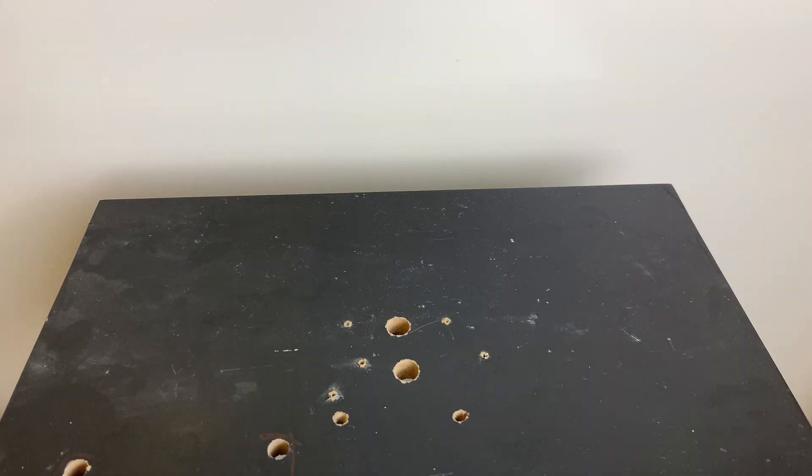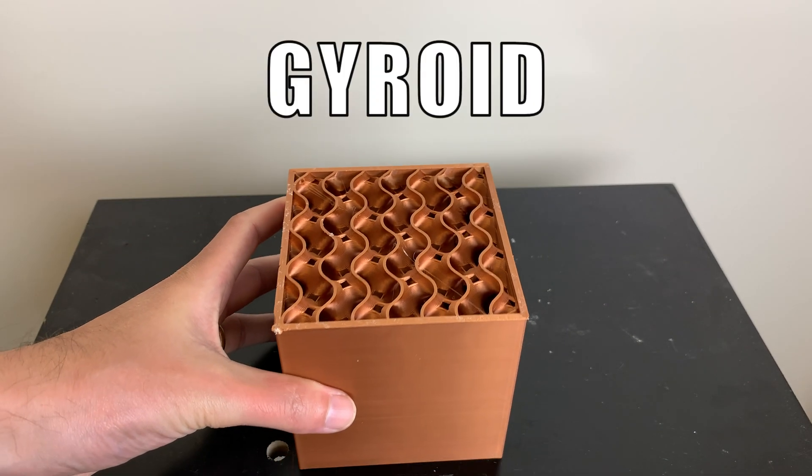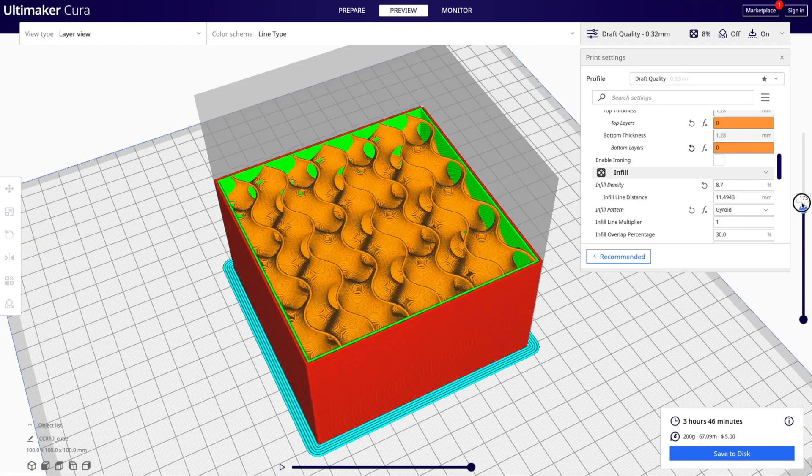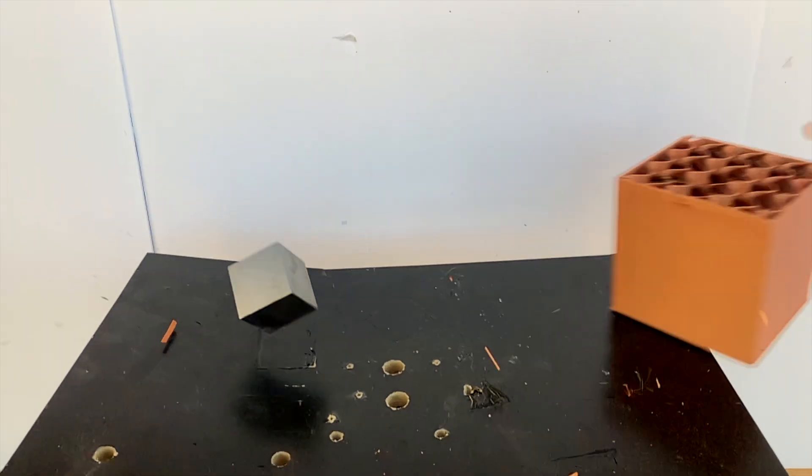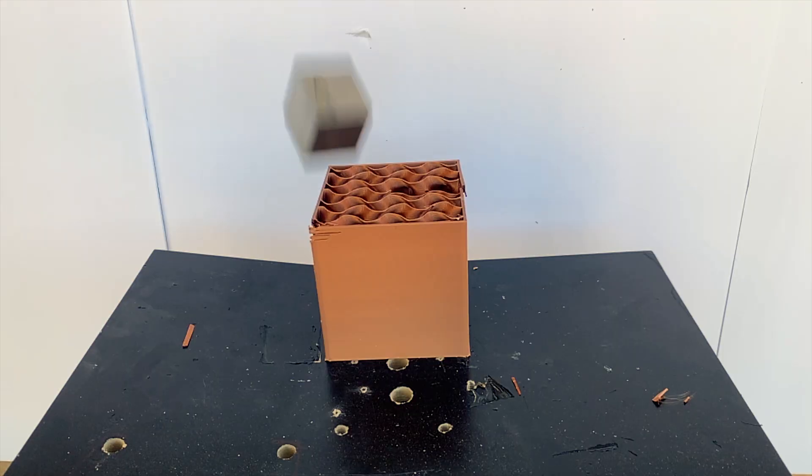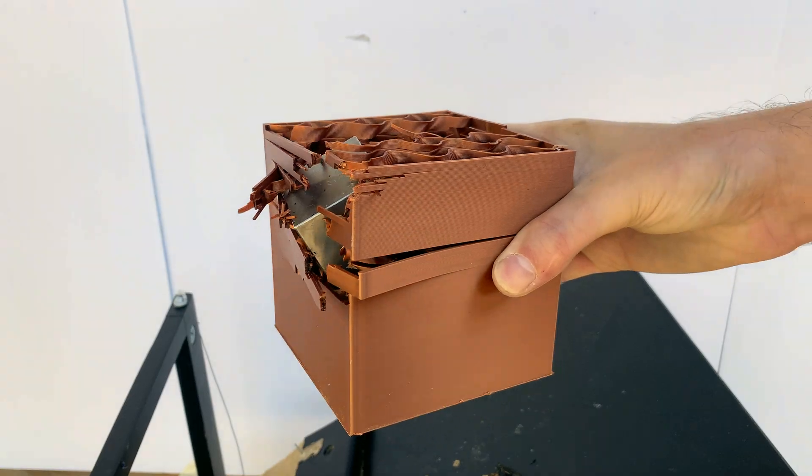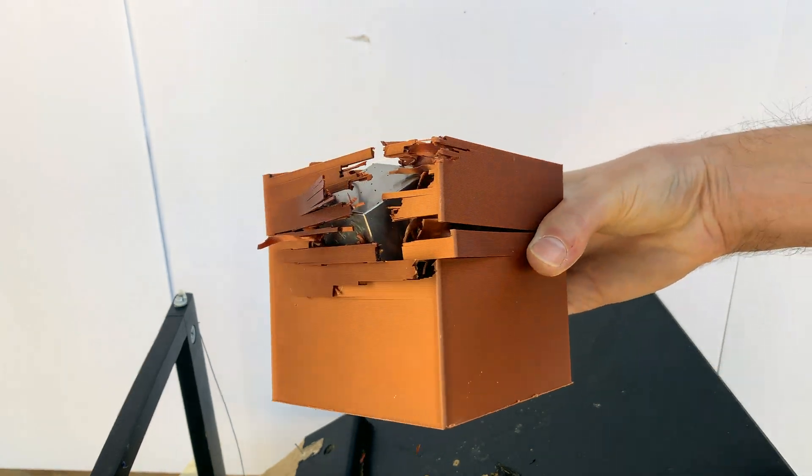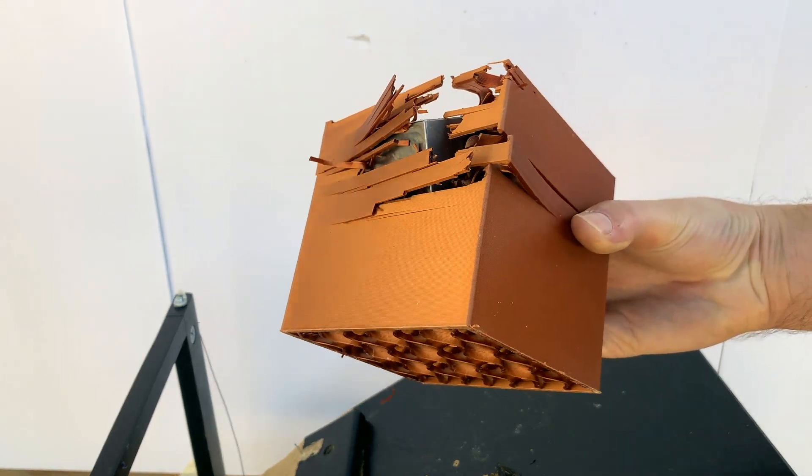Next we have my favorite 3D printing infill, gyroid. This infill creates a really cool wavy pattern. Besides the fact that my table is getting absolutely destroyed, it looks like the gyroid infill did a pretty good job also of stopping the tungsten cube. However, it's also important to note that the table probably did absorb some of the energy.